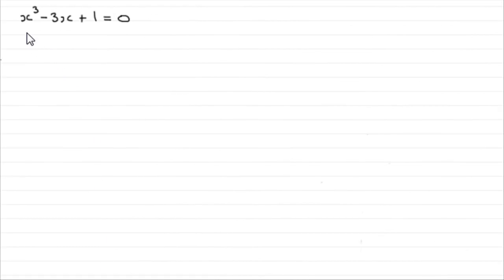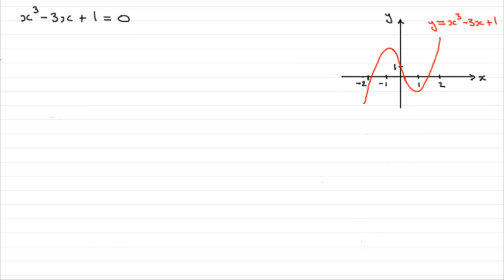Hi. Now suppose I had this equation: x cubed minus 3x plus 1 equals 0. How could I solve it? Well, one way would be to draw the graph — the graph of y equals x cubed minus 3x plus 1. We've got the value y equal to 0, and y is equal to 0 along the x-axis. So you can see we've got three solutions, three roots as we say.